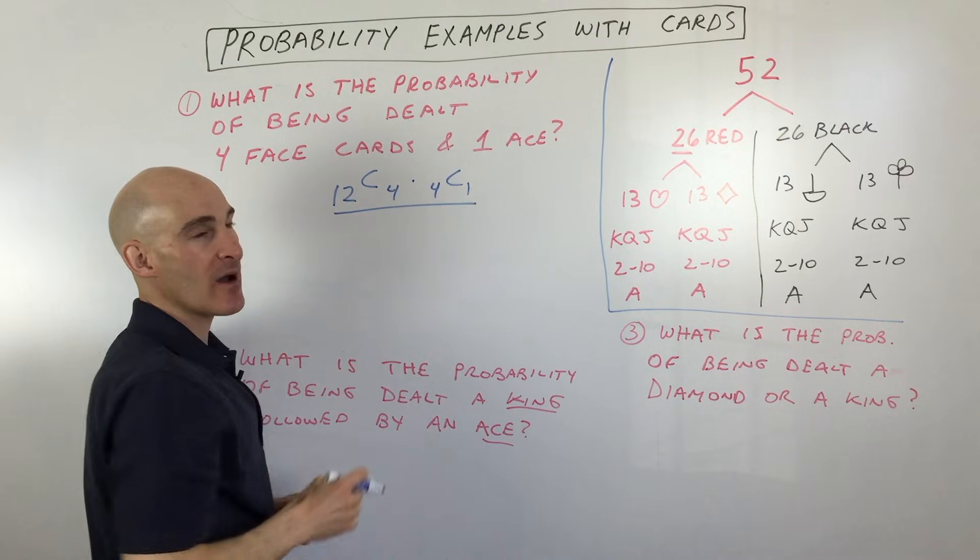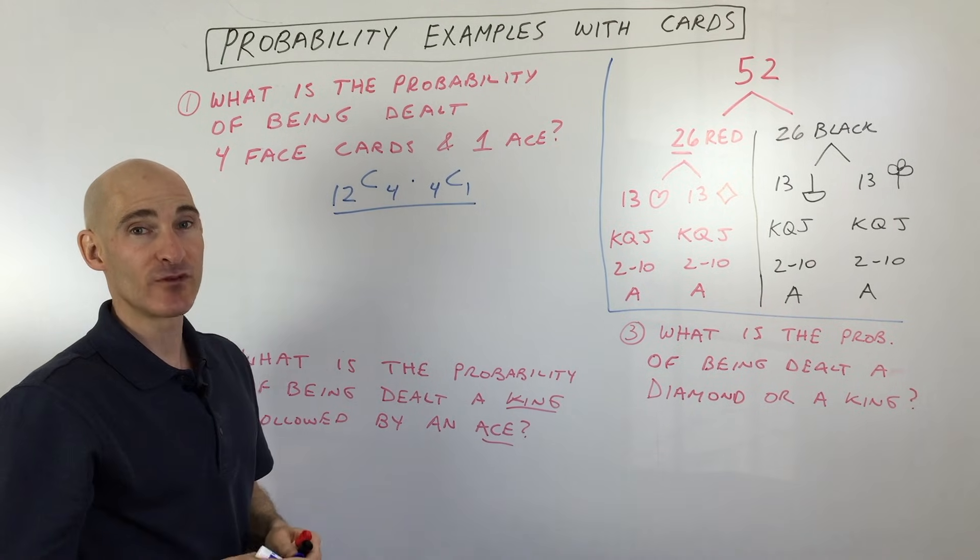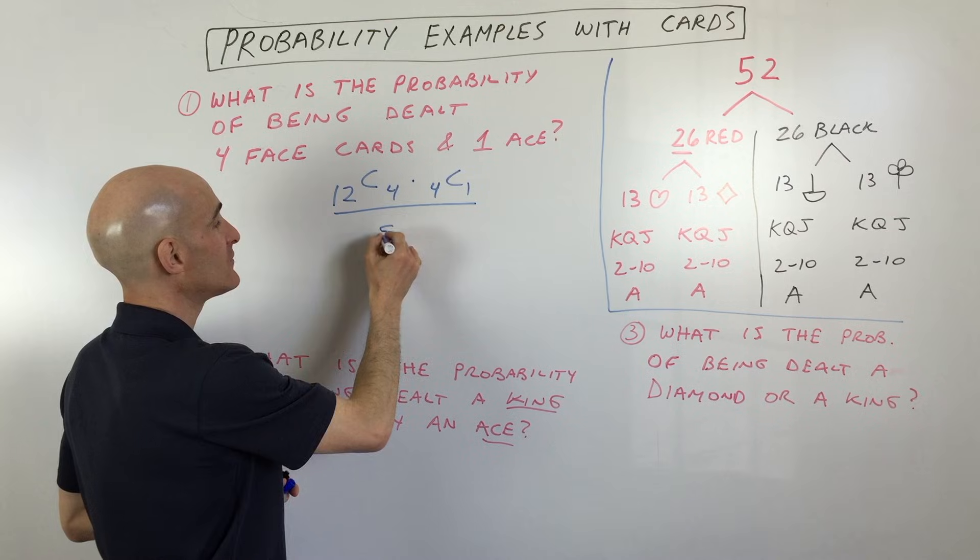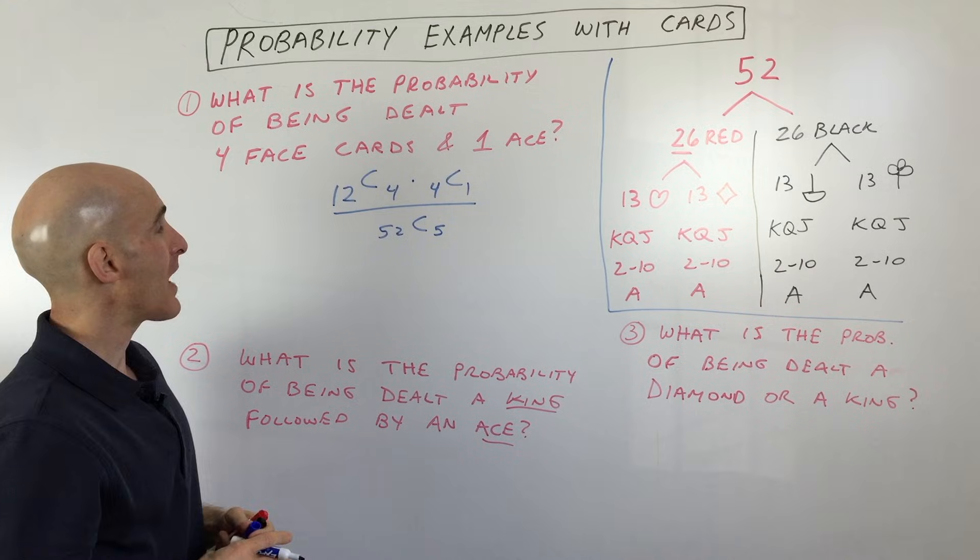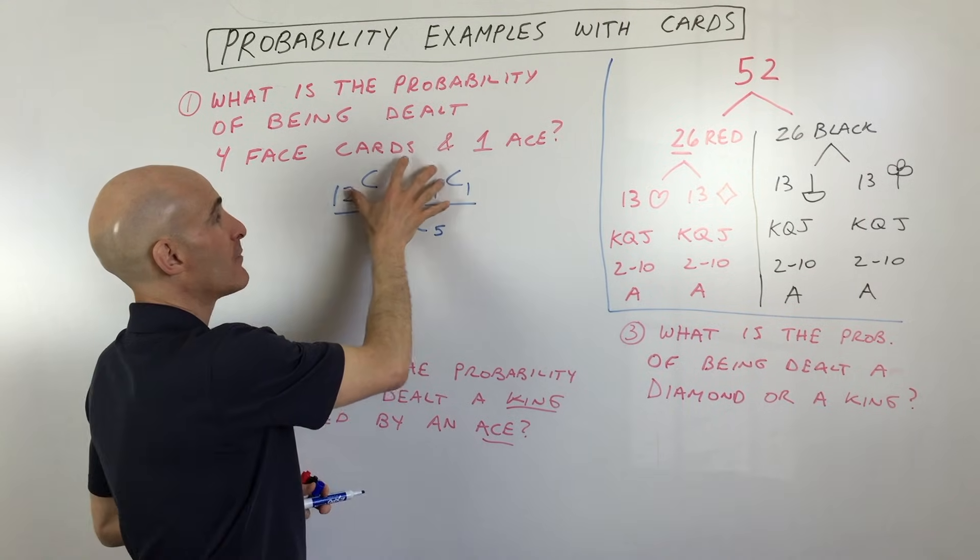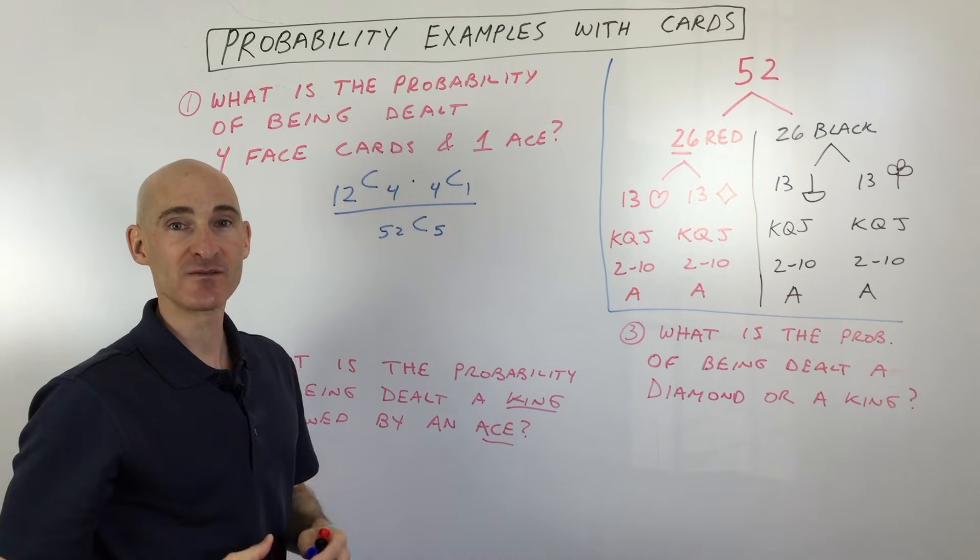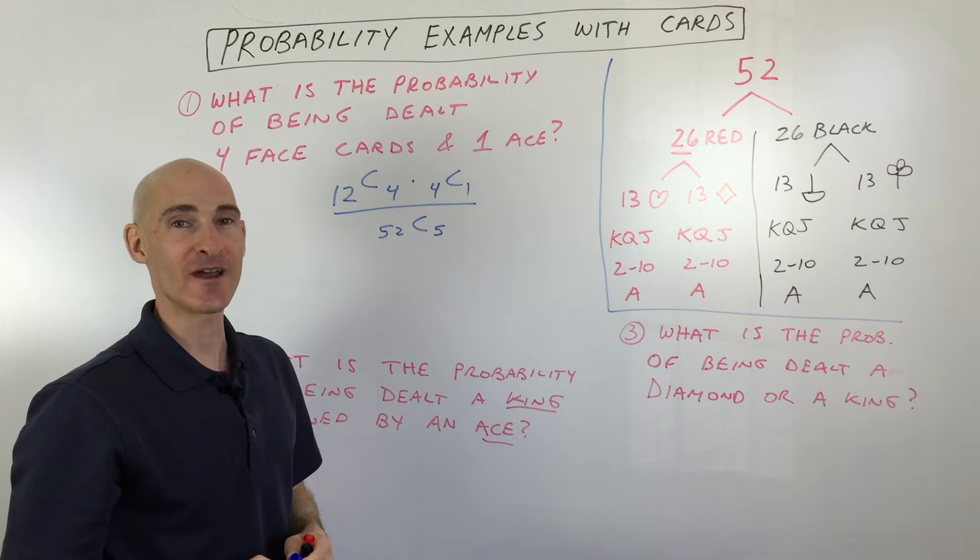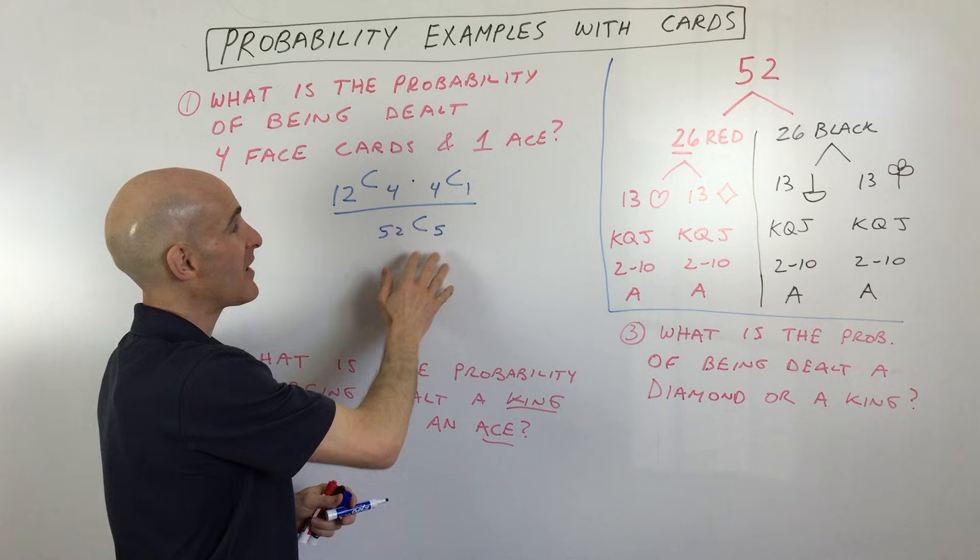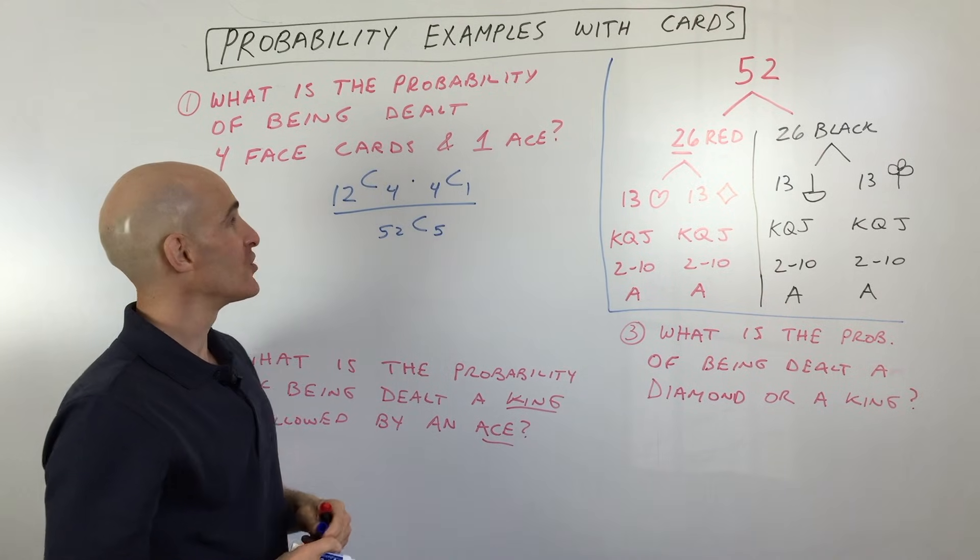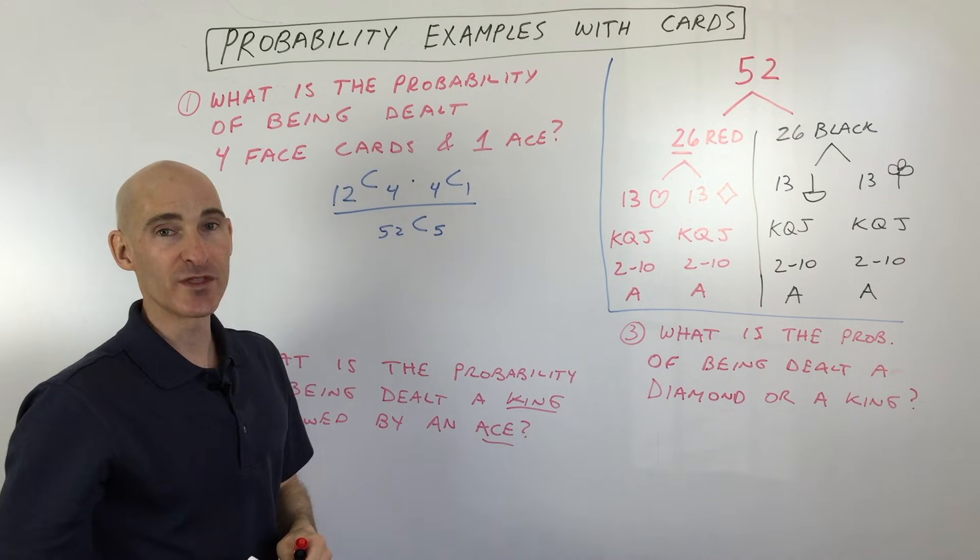And then we're going to divide that by the total possible five card hands. So out of 52 cards total, how many ways are there to choose five where the order doesn't matter? So probability is the number of successful outcomes, the number of things that you want to occur, divided by the total possible things that could occur. So if you simplify this out, you're going to be able to calculate what the probability is.